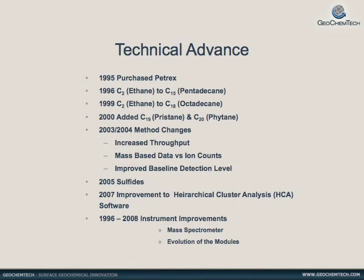Over the years, significant advances have been made to the technology. Initially, the range of compounds measured was increased to C20, including pristane and phytane, followed by improvements in laboratory throughput and baseline detection levels.